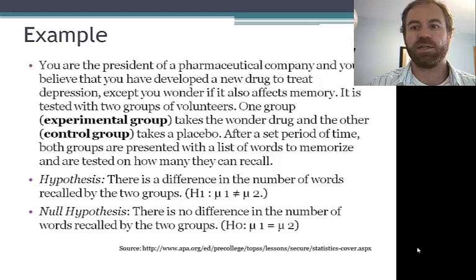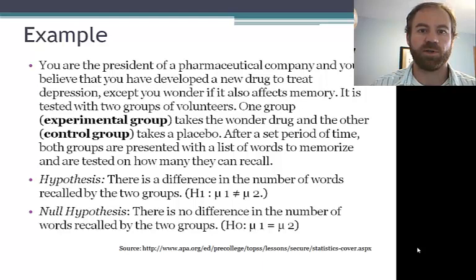Here's an example. Let's say that you're the president of a pharmaceutical company, and you believe that you've developed a new drug to treat depression, but you also wonder if it could also affect memory. It is tested with two groups of volunteers. One group, which would be the experimental group, takes the drug, and the other group takes a placebo. A placebo is a sugar pill that has no medical effect.